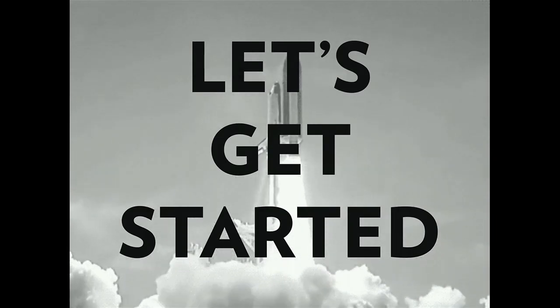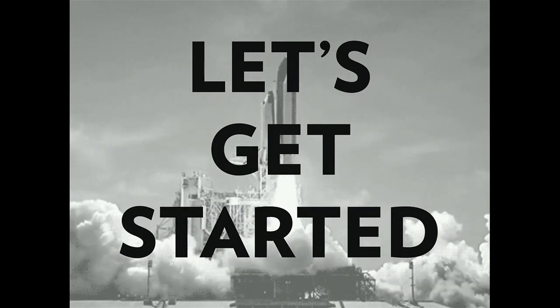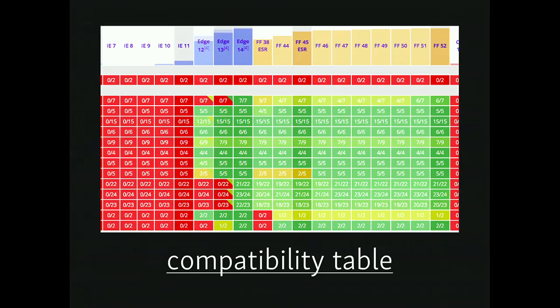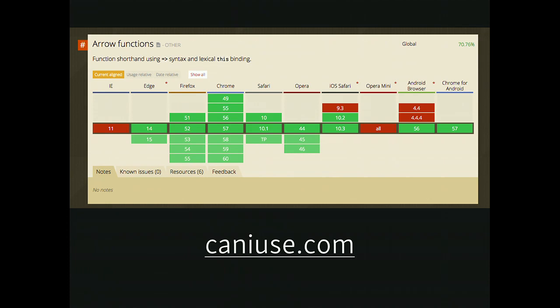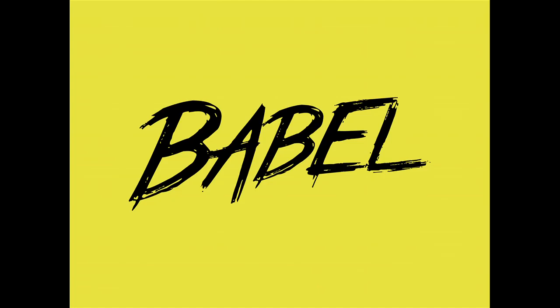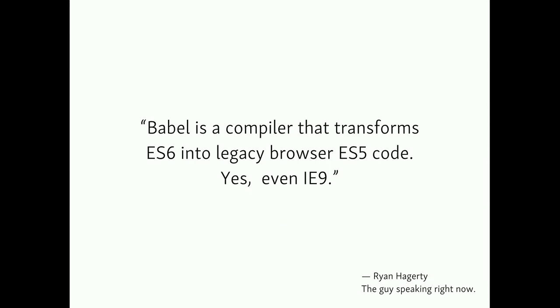Let's get started with ES6. You can ask yourself: I have some older browsers I have to support, can I use it? There's a site called Babel — we'll talk about it in depth. They have a compatibility table showing all the features of ES6 and which browsers support them. You can use caniuse.com to look up specific functions. Using arrow functions, you'll notice IE11 doesn't support them at all, and I don't know any website that can drop IE11. So the solution to that is Babel — a compiler that will transform ES6 into legacy browser ES5 code. Yes, even IE9. You can write ES6 and it'll work in IE9.